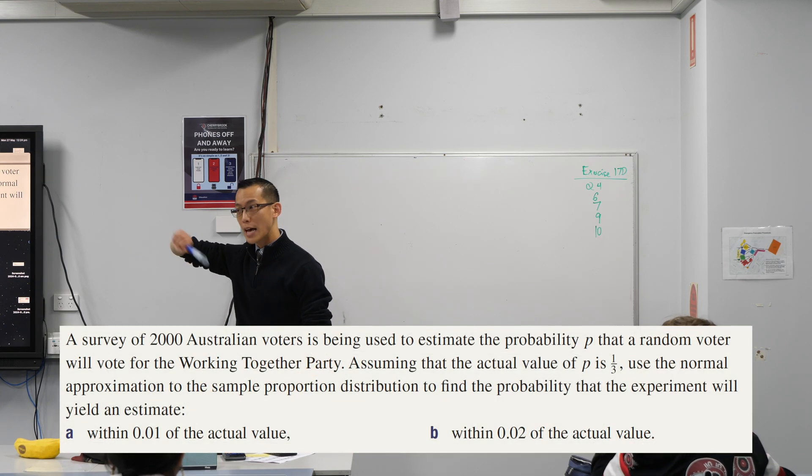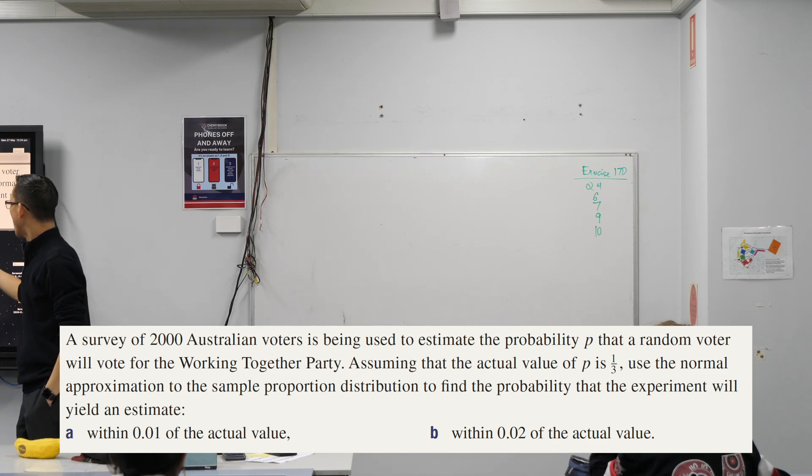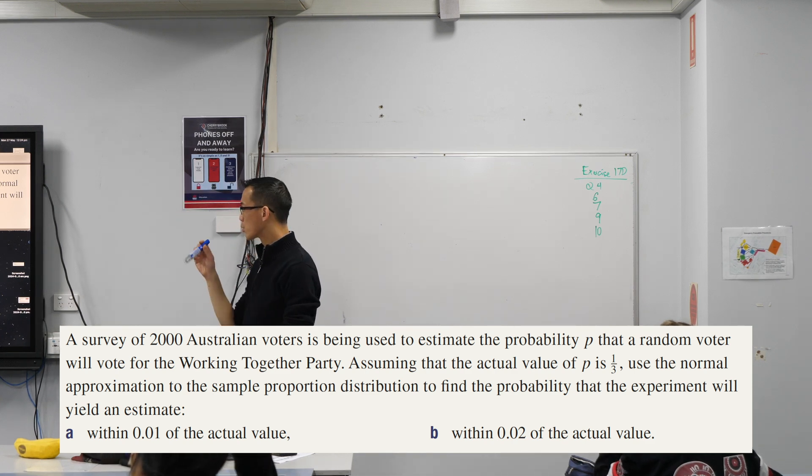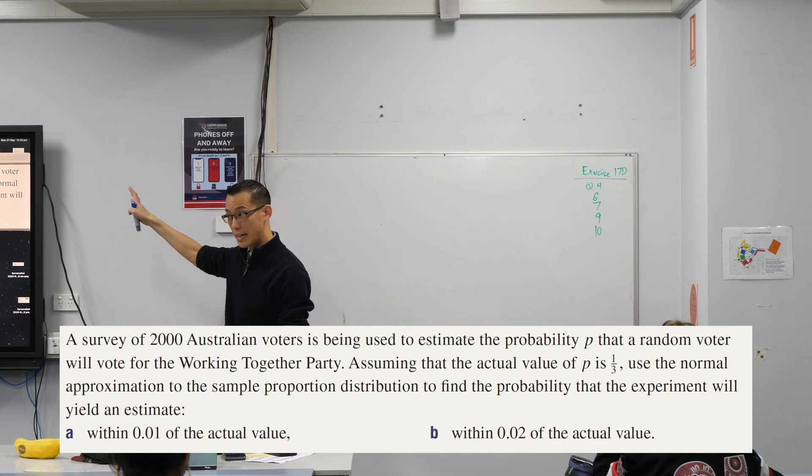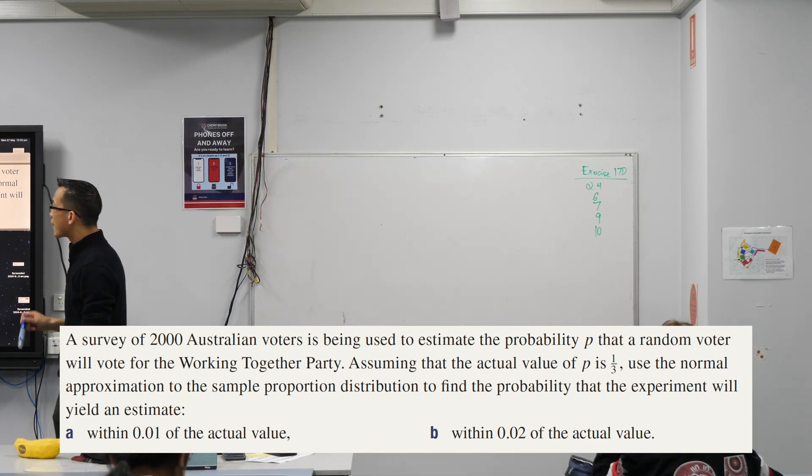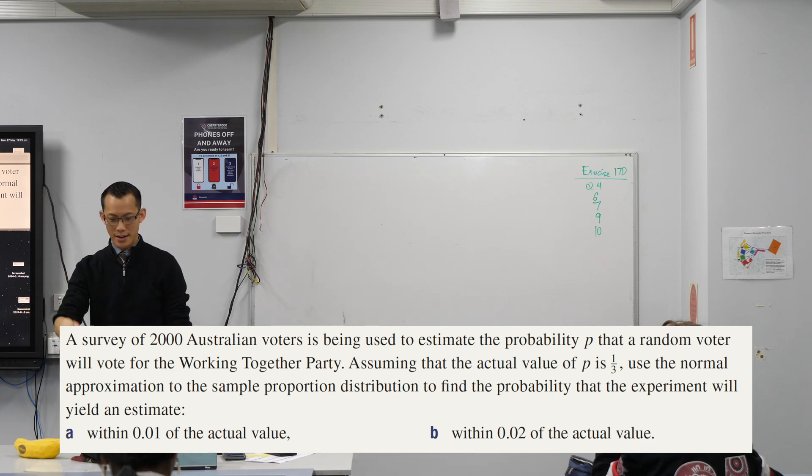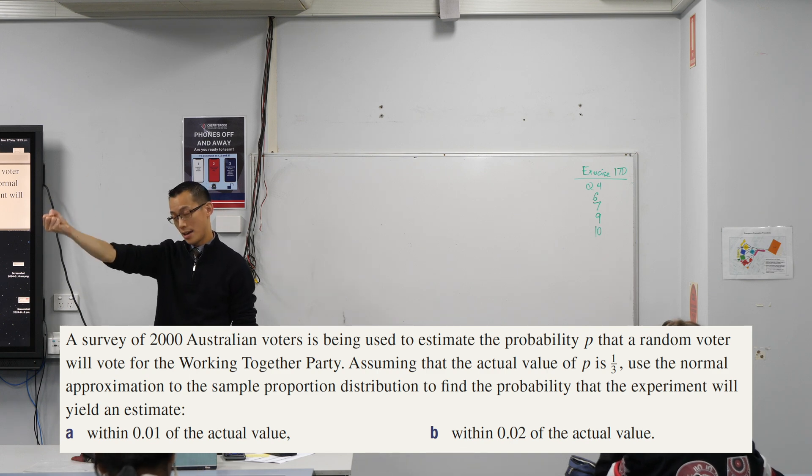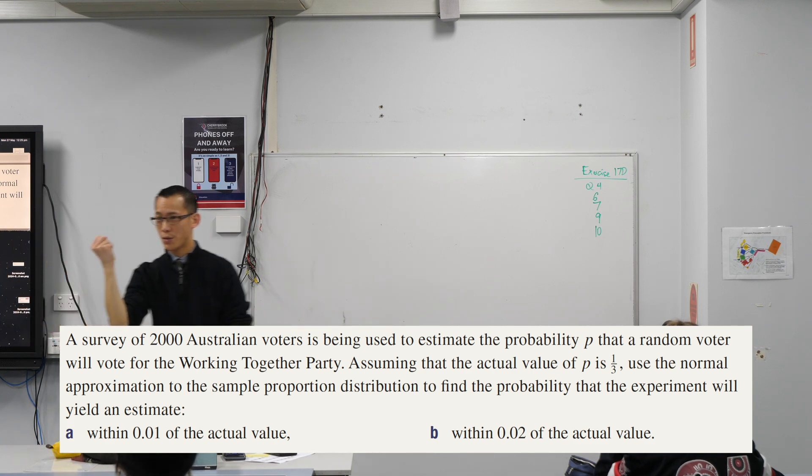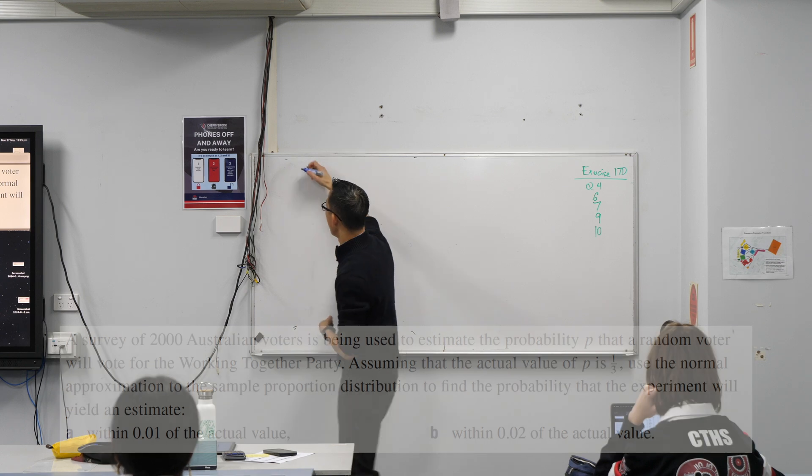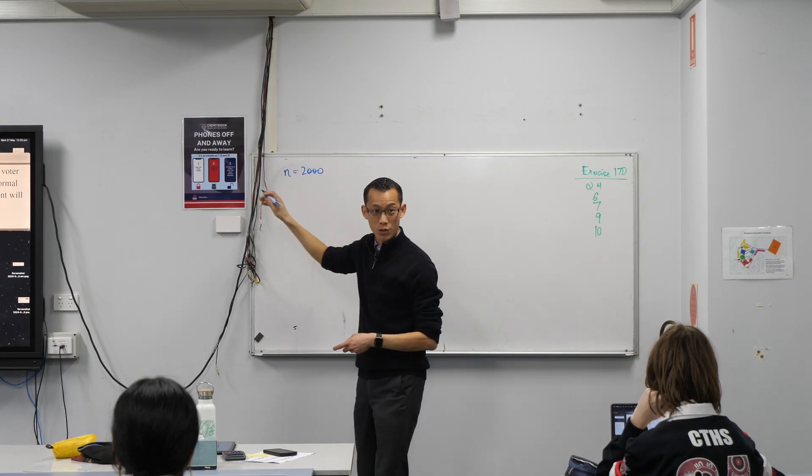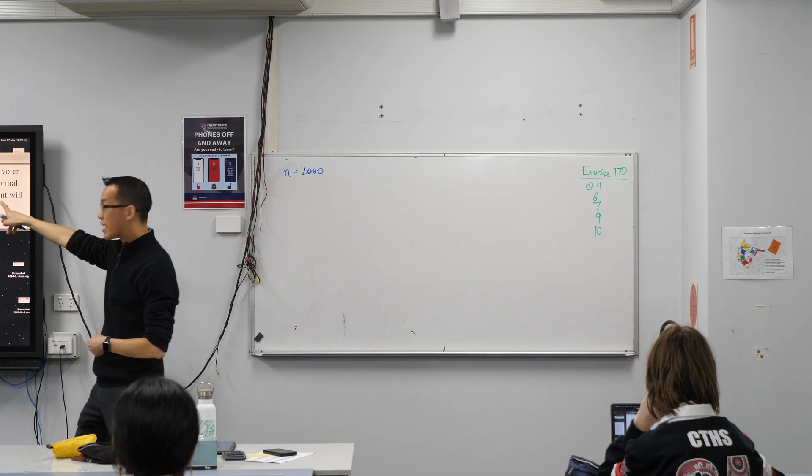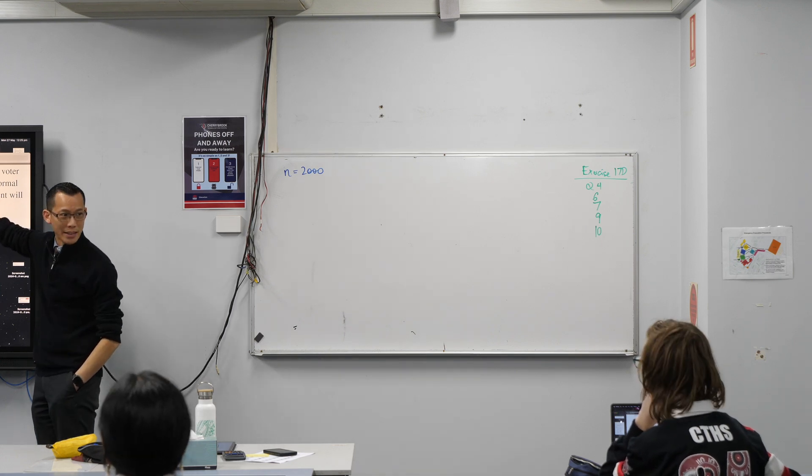Here's this final example I want to pull out for today. It overlaps a little bit with what you learned at the end of last week about normal approximation to the binomial distribution, but it looks at today's new idea about sample proportions. So let's just read it together and take in what's going on.